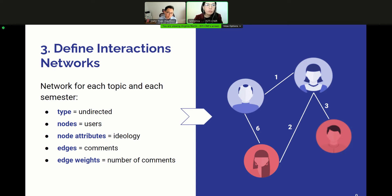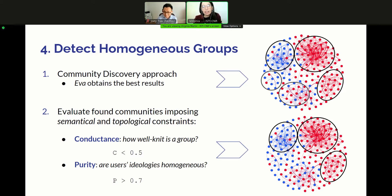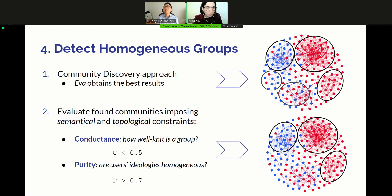We can now move on to the last step: detecting homogeneous groups of users in the defined networks. We address this problem by testing different community detection algorithms, such as Louvain, Infomap, and EVA. We obtain the best results using EVA, a community detection algorithm designed to identify topologically well-defined communities that are also homogeneous with respect to attributes carried by the nodes. Once we have identified our candidate communities for each topic and semester, we further evaluate them by imposing two constraints — one ideological and one structural. For topology, we measure community quality using conductance; if a community has conductance greater than 0.5, it is excluded. Similarly, we use purity to evaluate ideological homogeneity; if a community has purity smaller than 0.7, we do not consider it an echo-chamber.